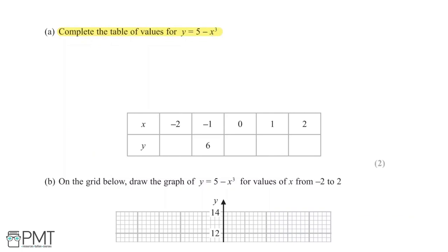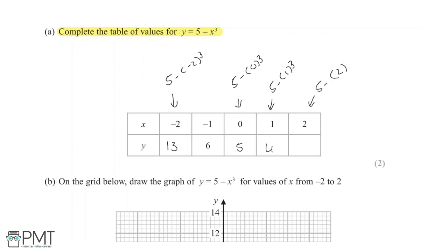We are asked to complete the table of values for y = 5 − x³. For x = −2: (−2)³ = −8, so y = 5 − (−8) = 13. For x = 0: y = 5. For x = 1: y = 5 − 1 = 4. For x = 2: y = 5 − 8 = −3. You get two marks for a fully correct table, or one mark for two or three correct values.